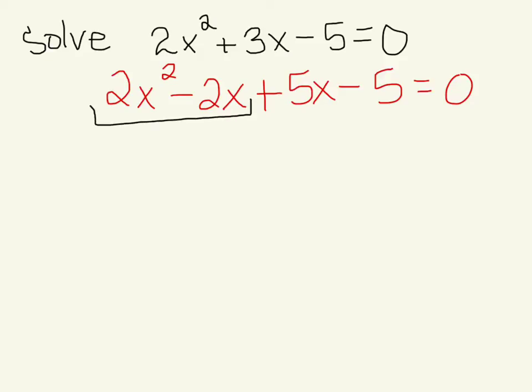What's in common between 2x² and negative 2x? We can factor out 2x from both of those terms, and what we have left over is x minus 1. From our last two terms, once we factor those, we can factor out a 5 and what we have left over is x minus 1 equals 0.